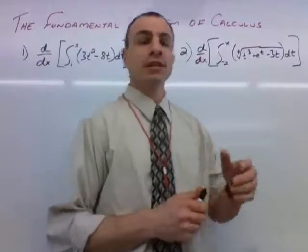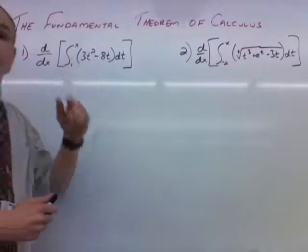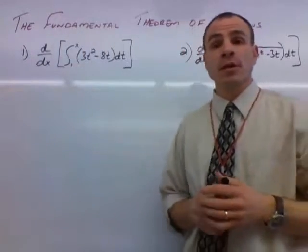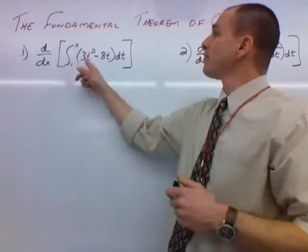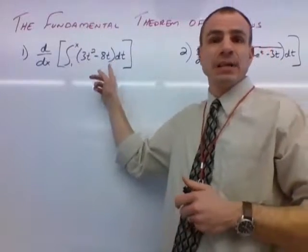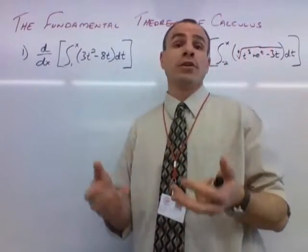What we're being asked to do right here is take the derivative of this accumulation function up here. So we have the integral from one to x of three t squared minus eight t dt. And after we get that, we wanna derive it.